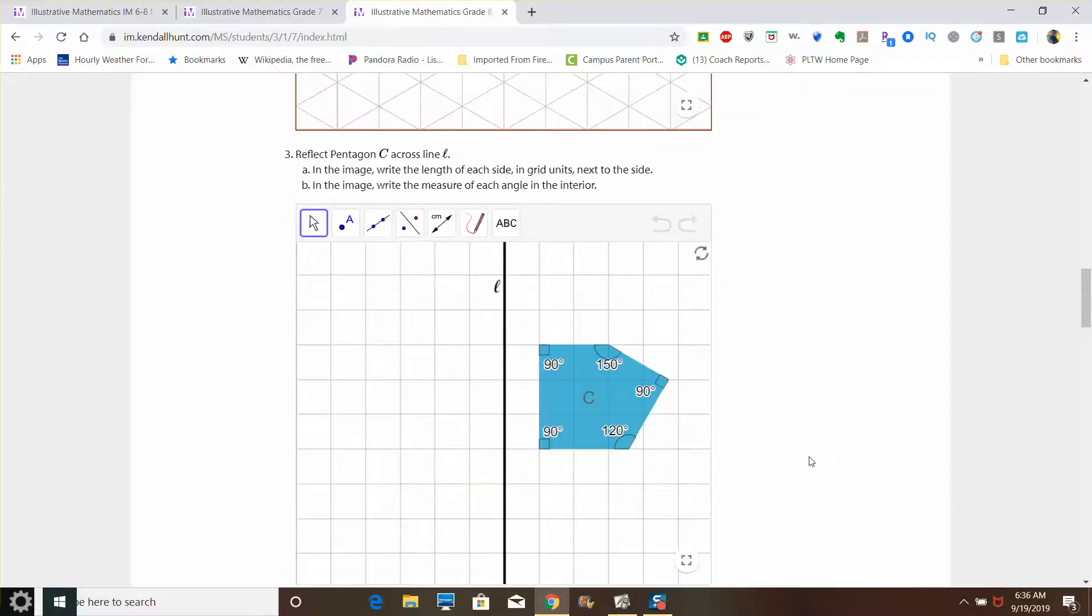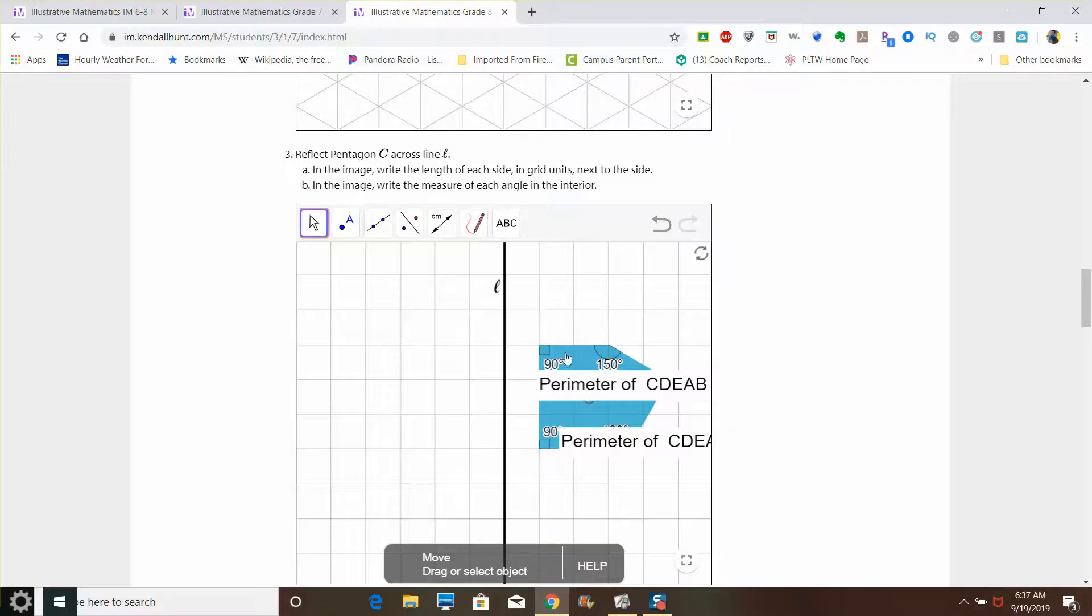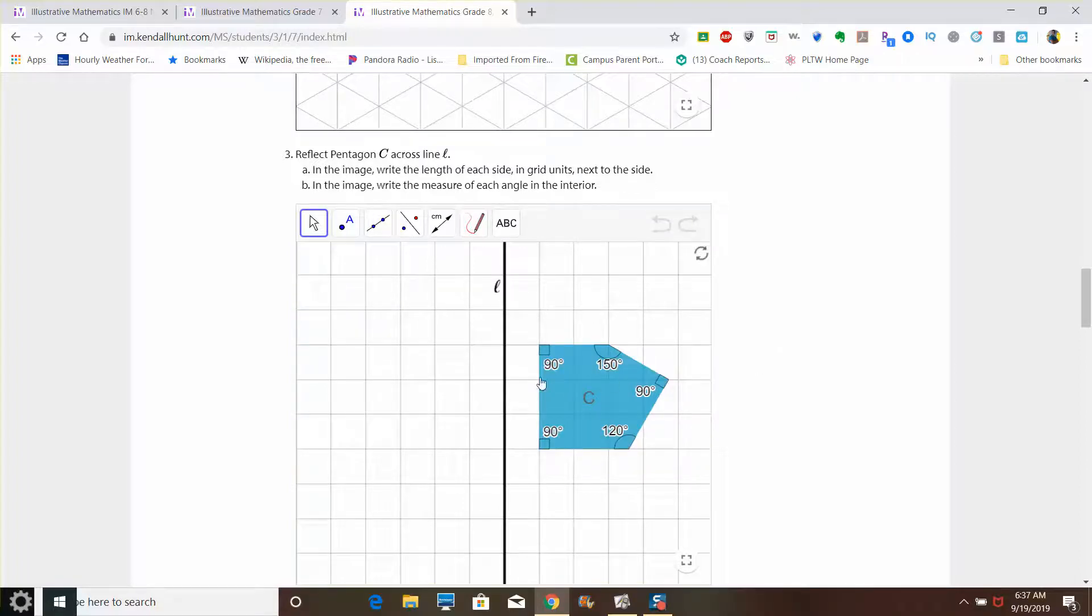Let's go ahead and do the same thing. We're going to reflect this pentagon across line L. We're going to write side lengths next to the sides, and we're going to write angle measurements next to the angles. I will point out that some of these side lengths are not going to be directly measured. This side length here to here is not two. It's longer than two. And we're not going to get into how to exactly determine what that is. But I will point out here that if we do this, it tells us the perimeter of this shape.